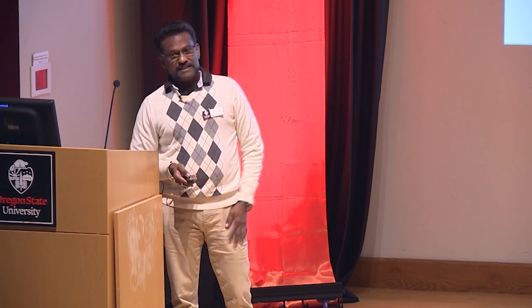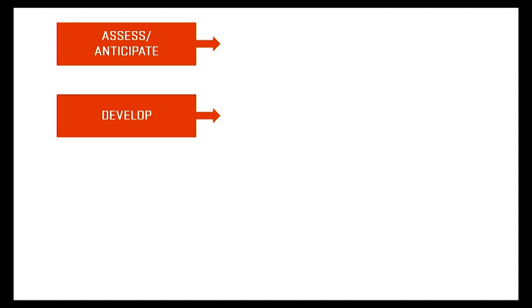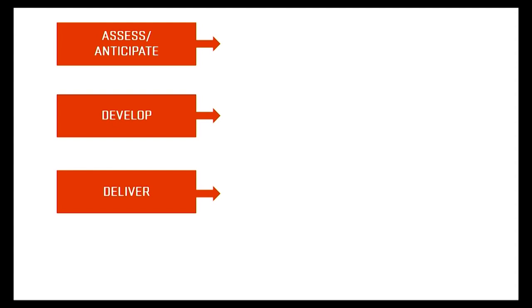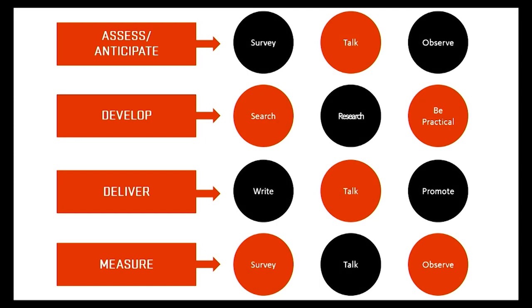The first element is assessing and anticipating the needs of the farmers. Many of you are working in different areas, but these elements are more or less the same for any program. Then we have to develop a solution or solutions to address those needs, then deliver them effectively, then measure the impact of the solution we delivered. Now you can see the full picture here.